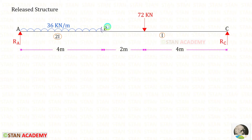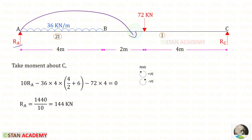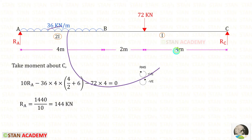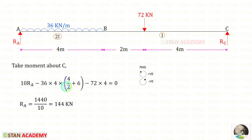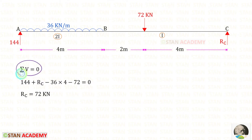From point B, I have removed Rb — now this is a simply supported beam. To find Ra, let us take moments about C, following the right-hand side rule where clockwise is positive and anticlockwise is negative. Ra is acting clockwise with distance 10, so we have 10·Ra. The UDL acts anticlockwise, and the point load acts anticlockwise. For Ra we will get 144 kilo-newton.